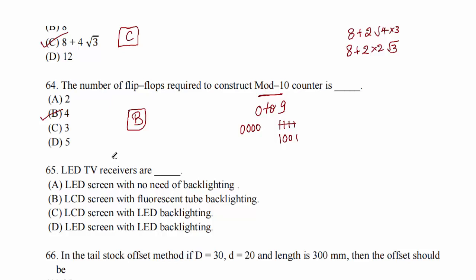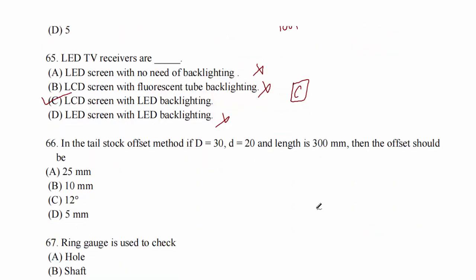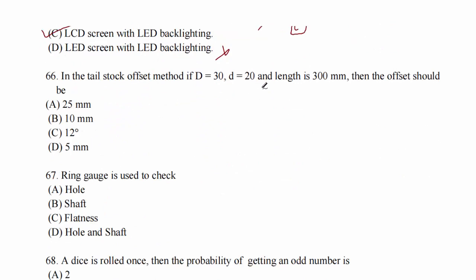Question 65: LED TV receivers are LCD screen with LED backlighting. Option C. Question 66: in the tailstock offset method, if D = 30 and d = 30 and length is 30 mm, then the offset is given by formula (D - d) × L / (2 × small l). On solving, you get 5 mm. Option D.